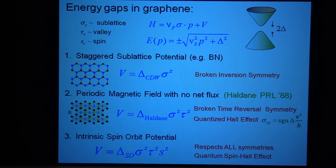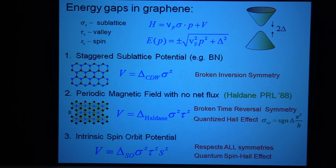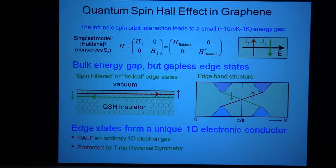When I first thought about this I thought I had discovered that graphene is actually an insulator. The problem with this argument is it's based on symmetry. Symmetry arguments are wonderful because you can know that they're right, but what they don't tell you is how big an effect is. The problem is that this spin-orbit potential in graphene is puny. But nonetheless it's something interesting to think about, because what it tells us is that we have an energy gap, but it's really just two copies of the Haldane model — one for the up spins and one for the down spins.